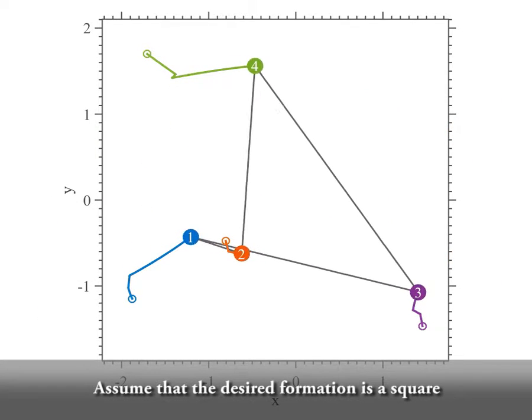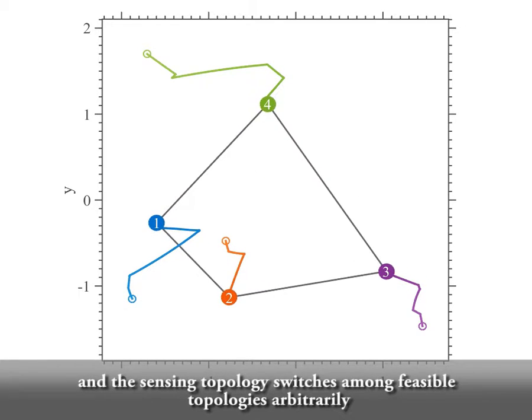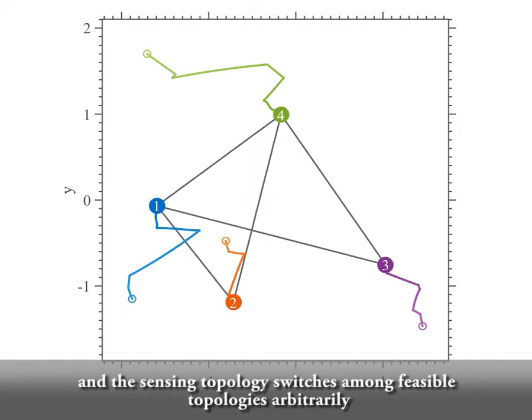Assume that the desired formation is a square, and the sensing topology switches among feasible topologies arbitrarily.